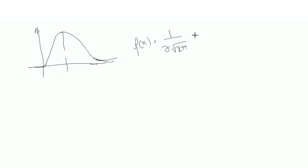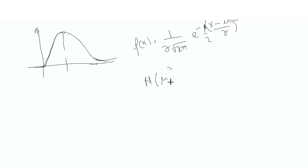The equation of a normal distribution is: 1 over sigma root 2pi, times e to the power of negative (x minus mu) over sigma, squared. This function is distributed with mean mu and standard deviation sigma, represented as N(mu, sigma). Mu and sigma are the only two unknown parameters — given mu and sigma, you can find the distribution of f(x).